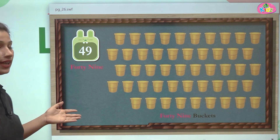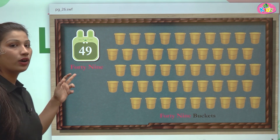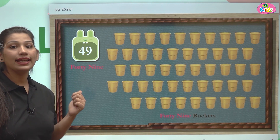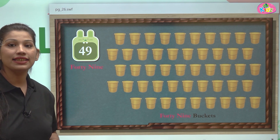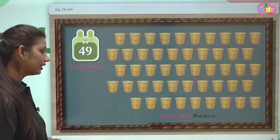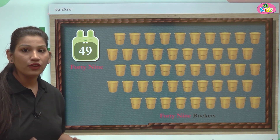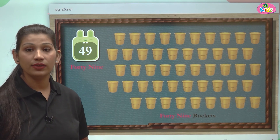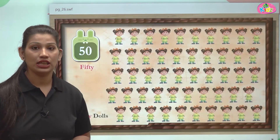49 is easy to write. F-O-R-T-Y is forty, N-I-N-E is nine — 49. After 49, there comes number 50.